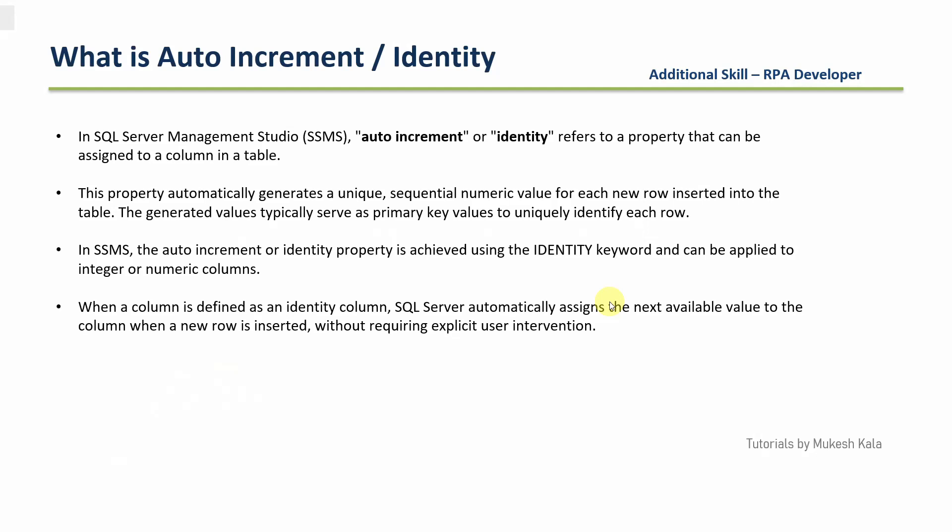Whenever you define a column as identity, SQL Server automatically assigns the next value — you don't have to write any code. Without human intervention, all of this is taken care of by SQL. In a nutshell, auto increment is a property that allows you to get a sequential number based on what you decide, and the keyword we use is identity. Let's see this in action in SQL Server Management Studio.